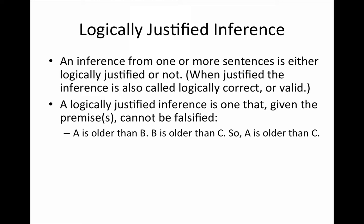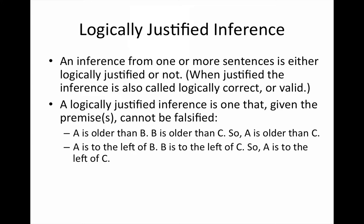In other words, when the premises 'A is older than B' and 'B is older than C' are true, we can't falsify the inference to the statement 'A is older than C.' Here's another example: A is to the left of B, B is to the left of C, so A is to the left of C. If you diagram out the premises, there won't be any arrangement that preserves the truth of the relation 'left of' that would allow you to falsify the conclusion.